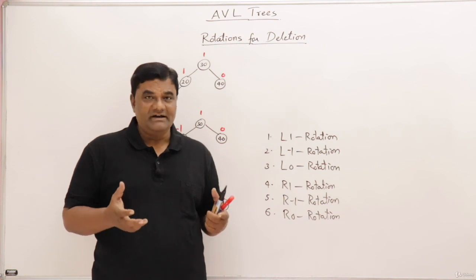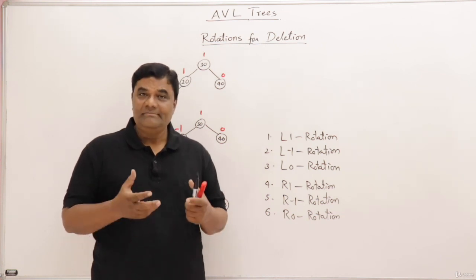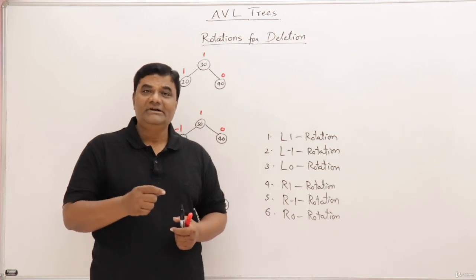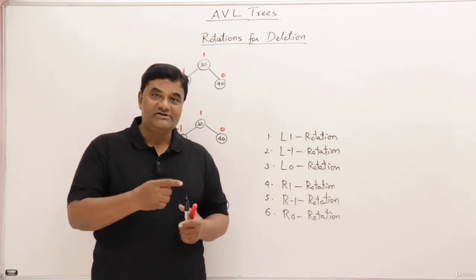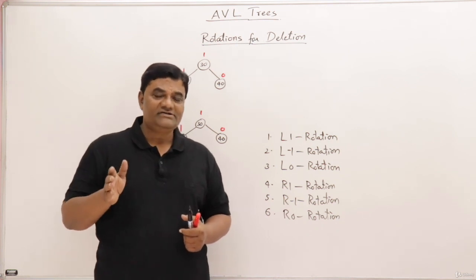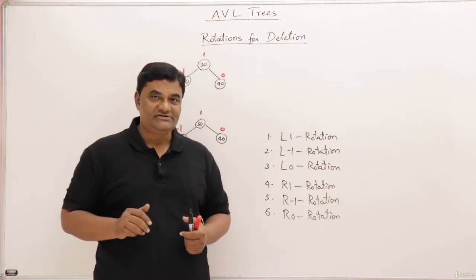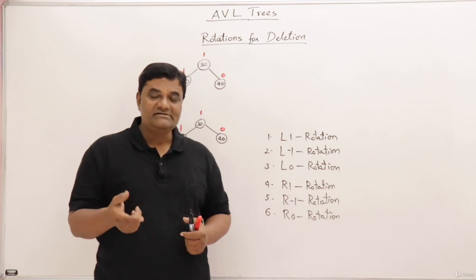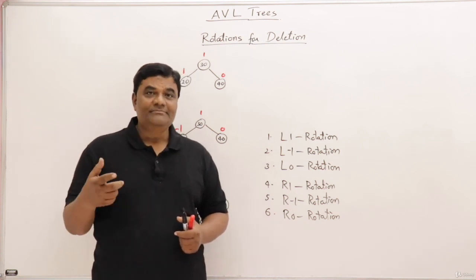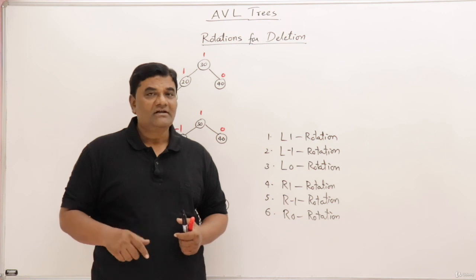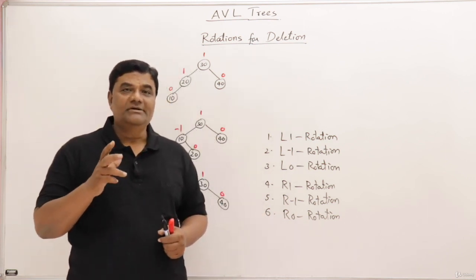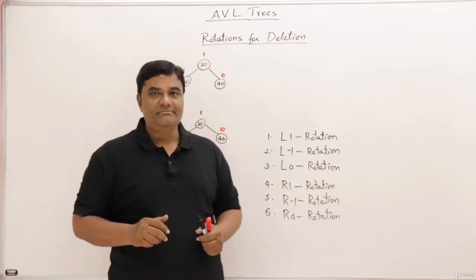AVL trees are height-balanced binary search trees, and height balancing is done with balance factors. If any node becomes imbalanced, we perform rotations for balancing it. We have already seen how rotations are performed at the time of insertion — if any node is imbalanced, there are four different types of rotations you can perform. At the time of deletion also, any node may become imbalanced.